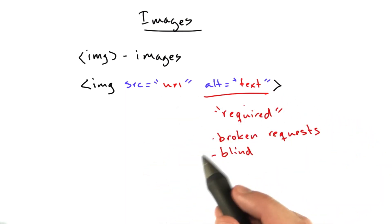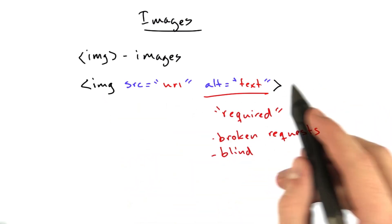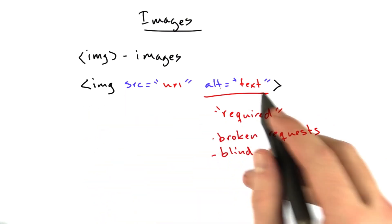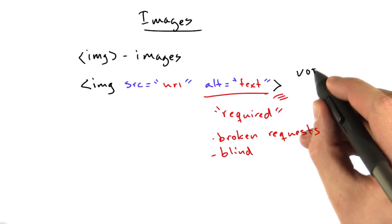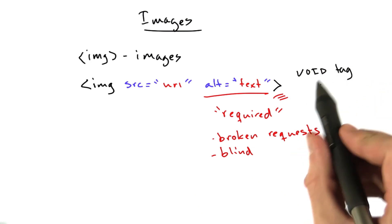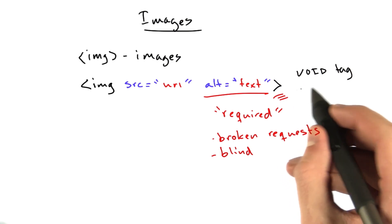And one other thing I'd like to point out here is every tag we've talked about so far has had a closing tag. Images don't. This is the entire tag. There's no contents to an image. See? It just ends right here. This is called a void tag. A void tag is a tag that has no content. And because it has no content, it doesn't need a closing tag.